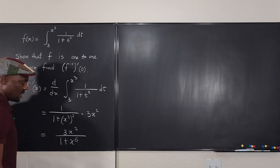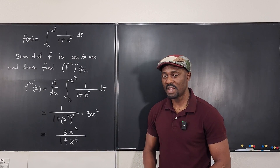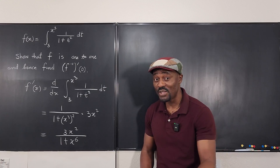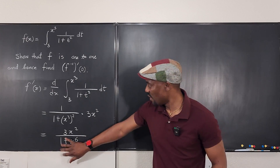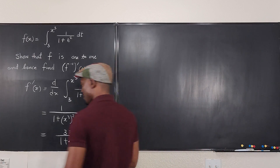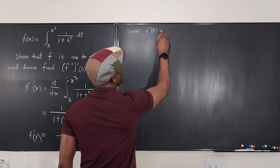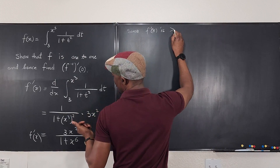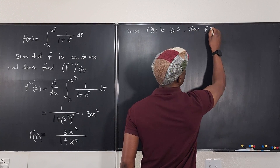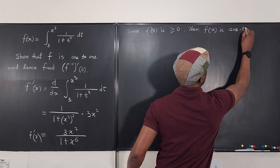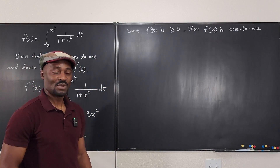Now look at f'(x) = 3x²/(1 + x⁶). Is it always positive or always negative? For all values of x, even if x is negative, squaring it makes it positive. Everything in this expression is positive, so f'(x) ≥ 0 for all x. Therefore, f(x) is a one-to-one function.